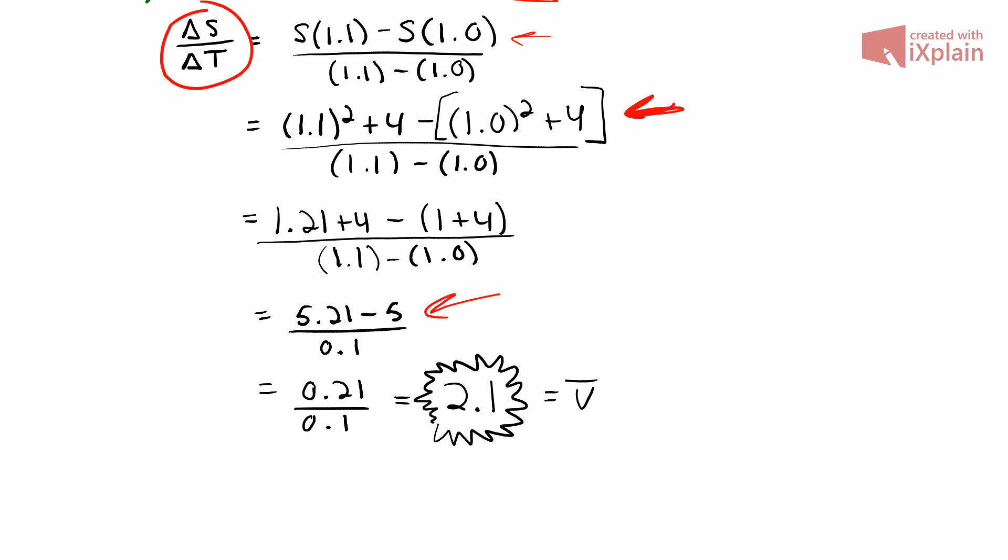When that's worked out, we get 0.21 divided by 0.1, and that equals 2.1. That is our average velocity.